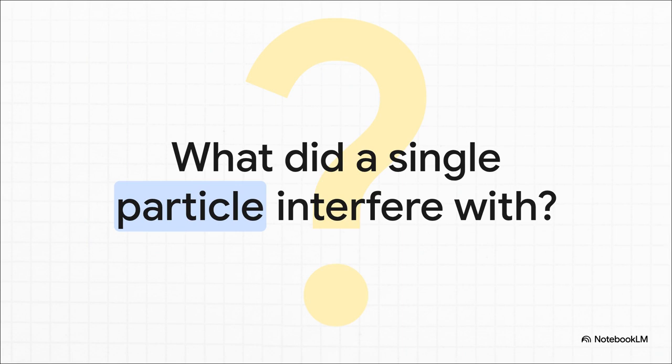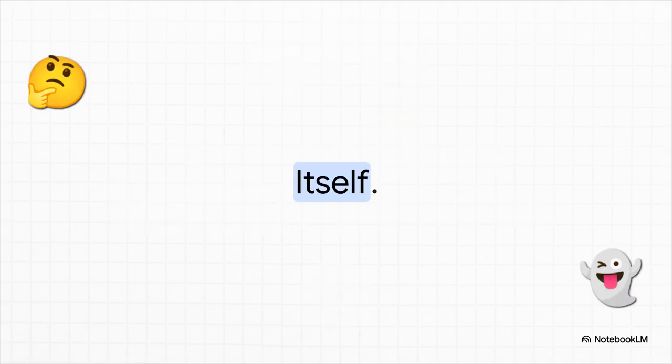Nothing shows how bizarre this is better than the famous double-slit experiment. Scientists fired a single particle, just one at a time, at a screen with two slits in it. But the pattern that showed up on the wall behind it looked like waves had been interfering with each other. Which led to a really, really weird question. Yeah. The only answer that makes any sense is that the particle interfered with itself. It acted like a wave, went through both slits at the same time, and then interfered on the other side. Think about that for a second.